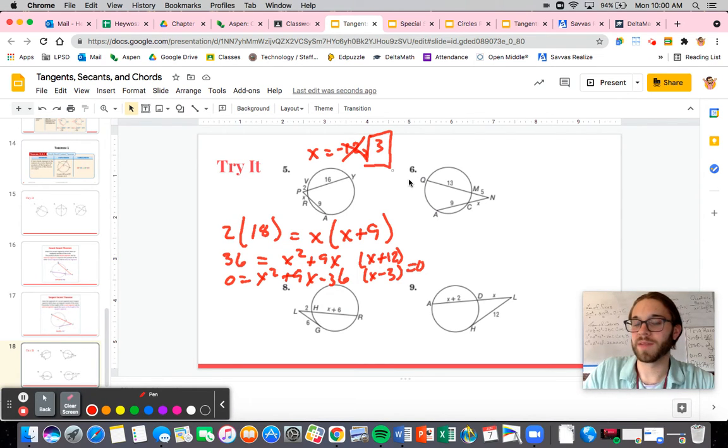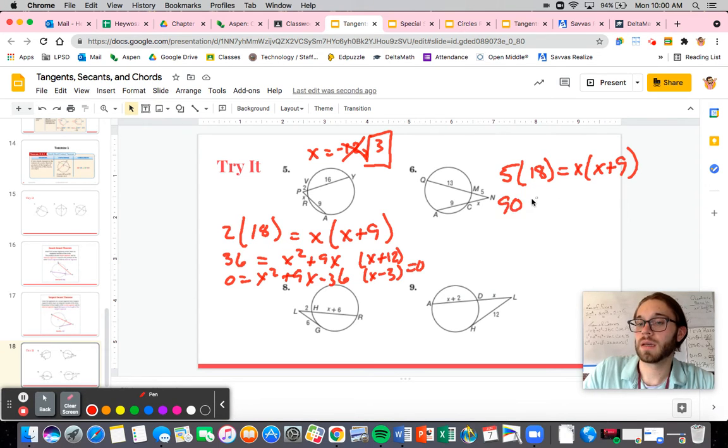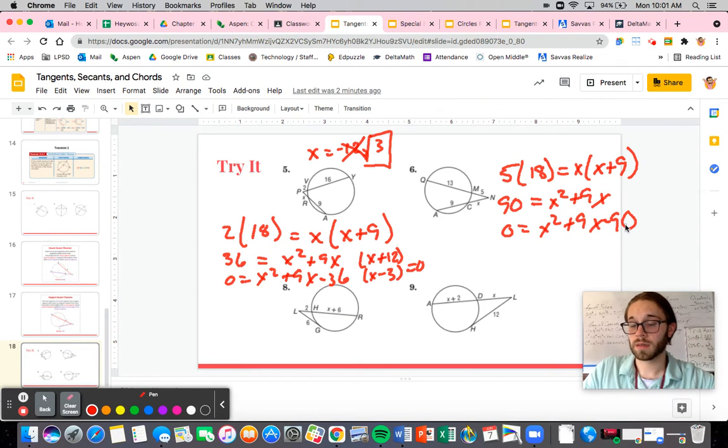My answer is just going to be three. If you have a negative solution, you plug it in, it doesn't make any sense. So same thing here, five times 18 is equal to X times X plus nine. So we have 90 is equal to X squared plus nine X. Zero is equal to X squared plus nine X minus 90.